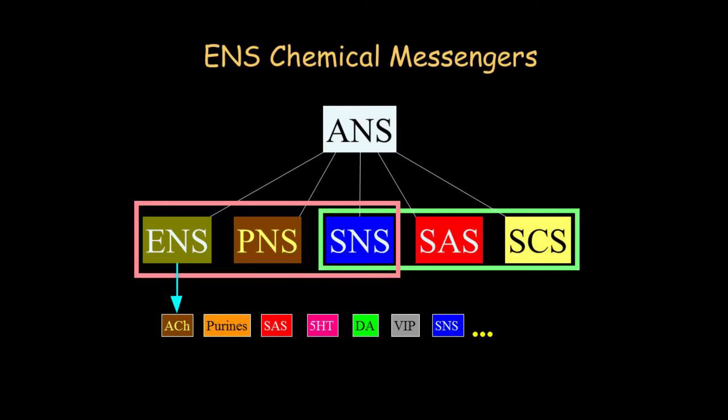There are numerous putative transmitters that interact. The enteric, sympathetic, and parasympathetic nervous systems also have interactions in the gut. So the gut is really, really hard to understand in any kind of a simple way.